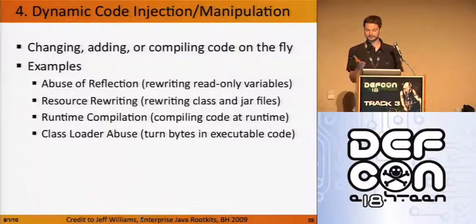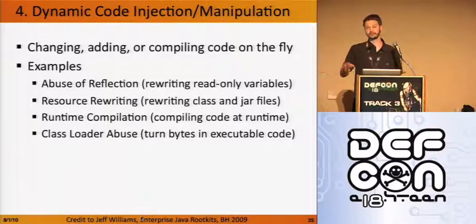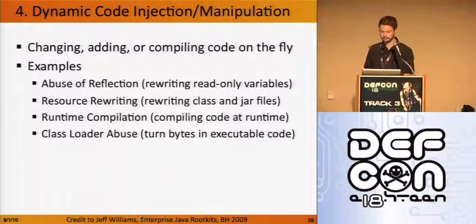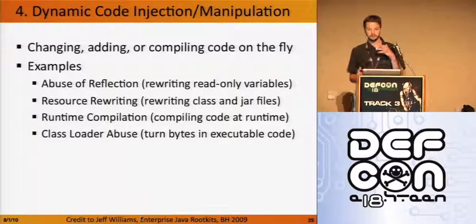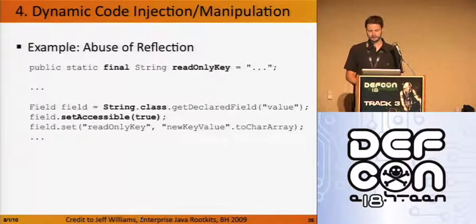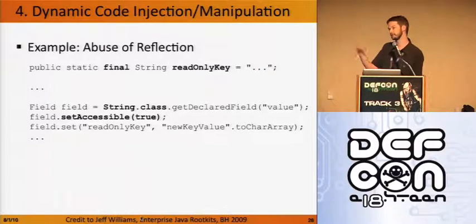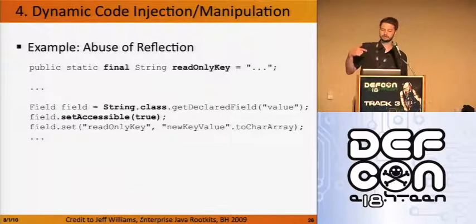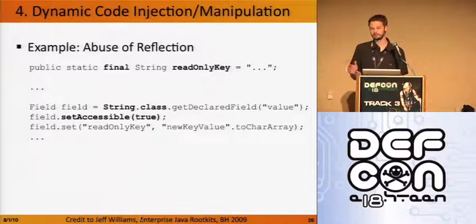Dynamic code injection and manipulation is all about changing, adding, and compiling code on the fly — you have source code in your application, compile it on the fly, and execute it. We were inspired by Jeff Williams' work, which enumerates categories like abuse of reflection to rewrite read-only variables, resource rewriting, compilation on the fly, and abusing class loaders. One example from his work: you have final strings in your application that you can't normally modify. By changing the String class itself, all final strings become writable — it no longer matters if a string is declared final; you can rewrite all of them.